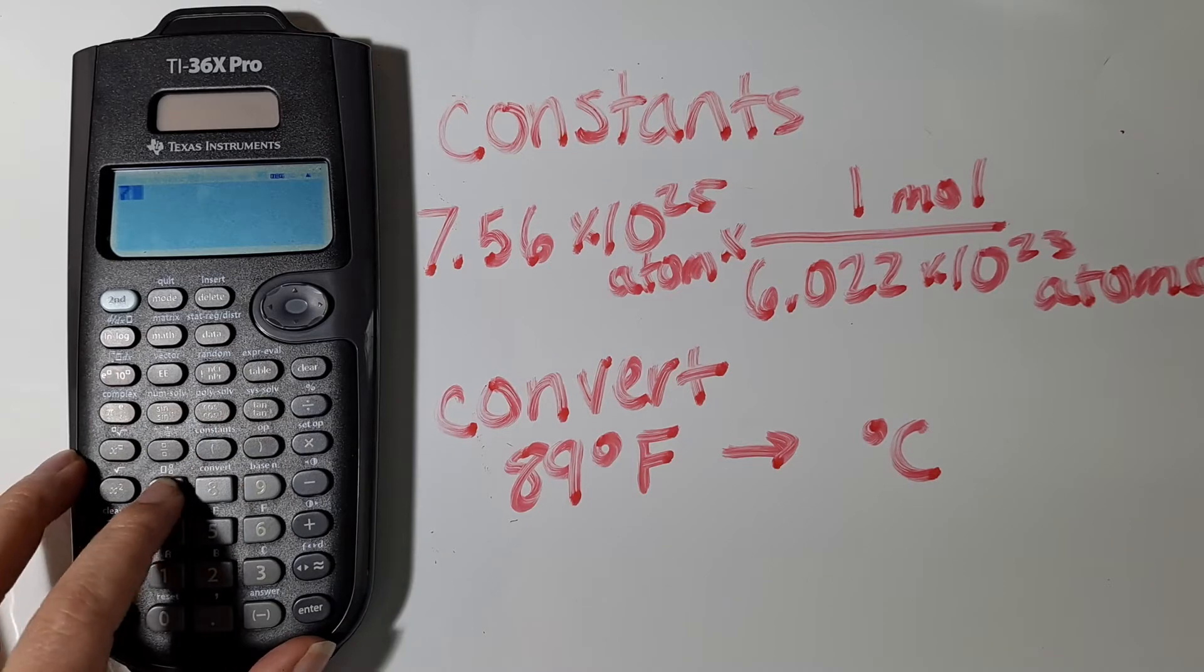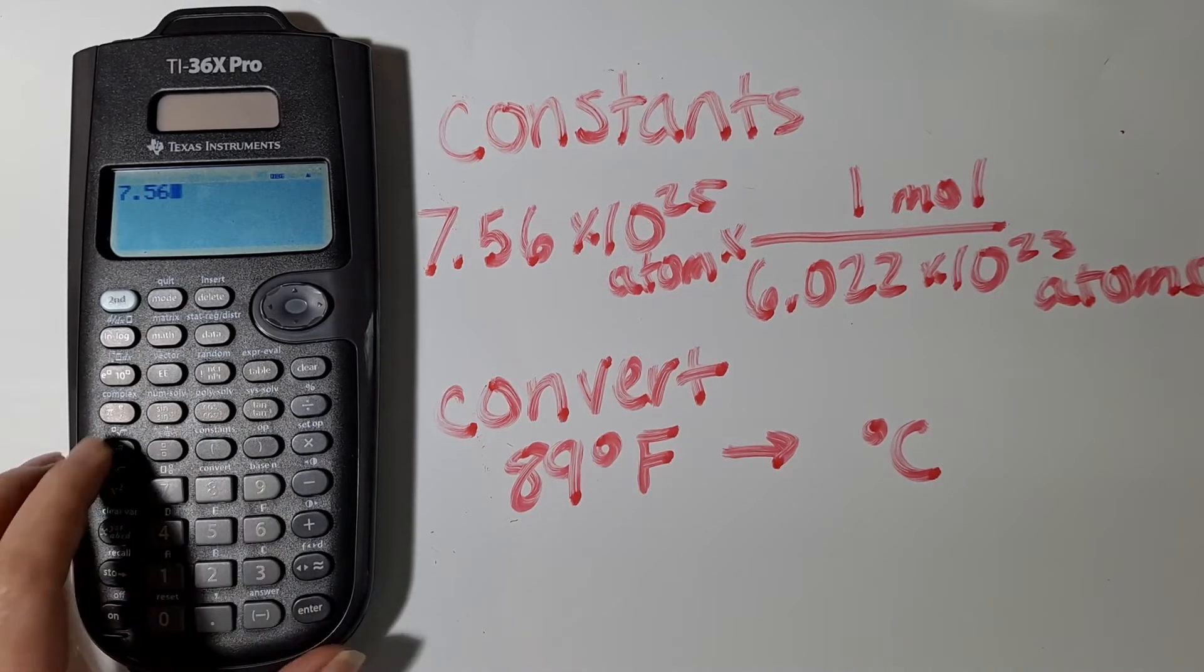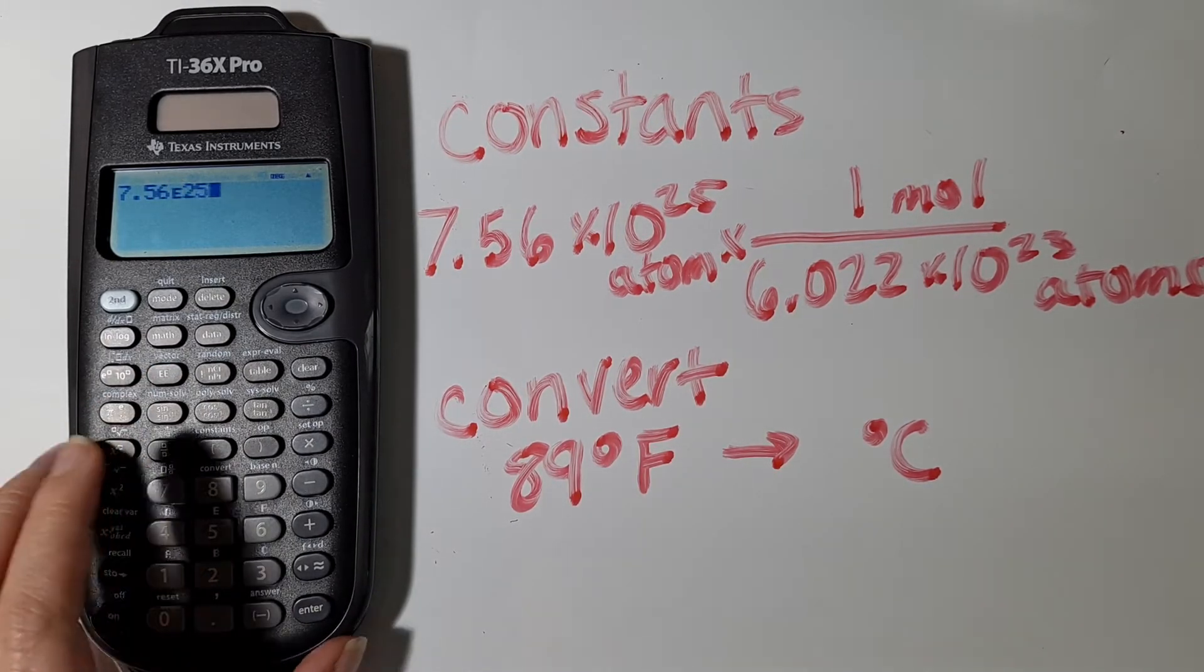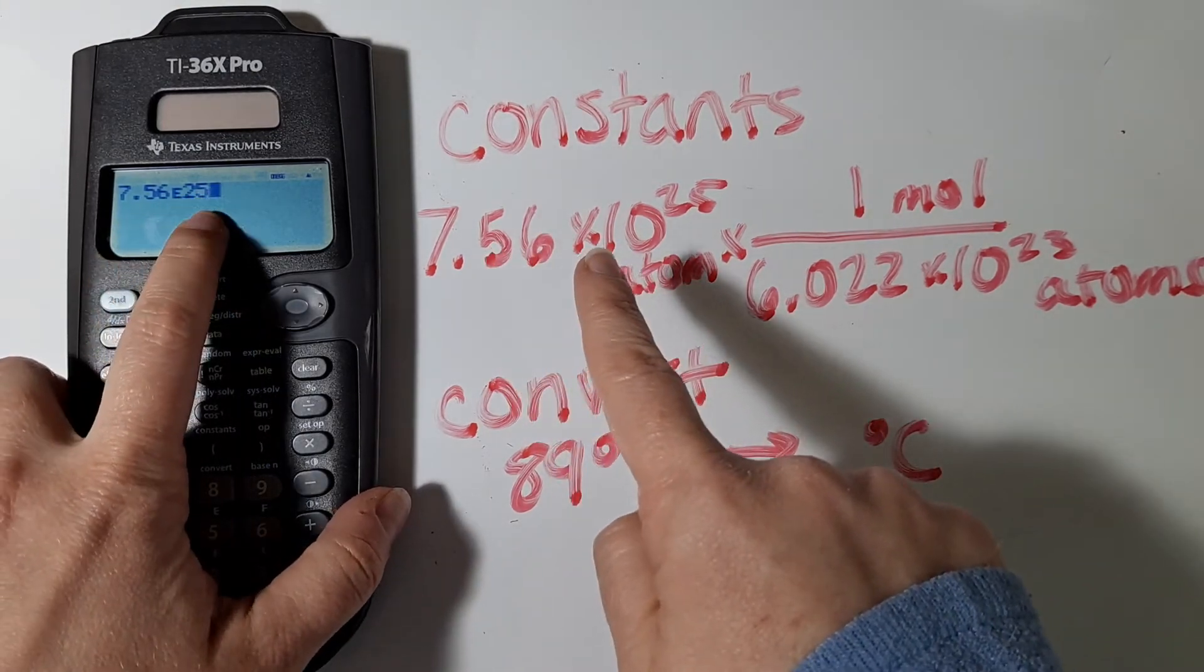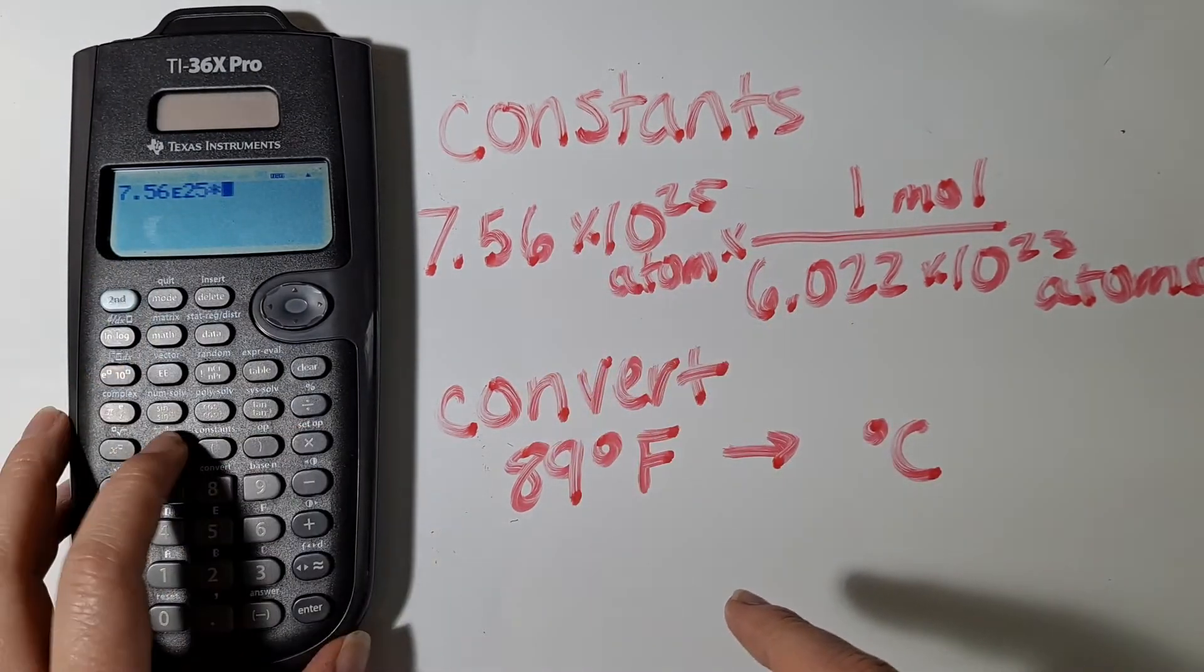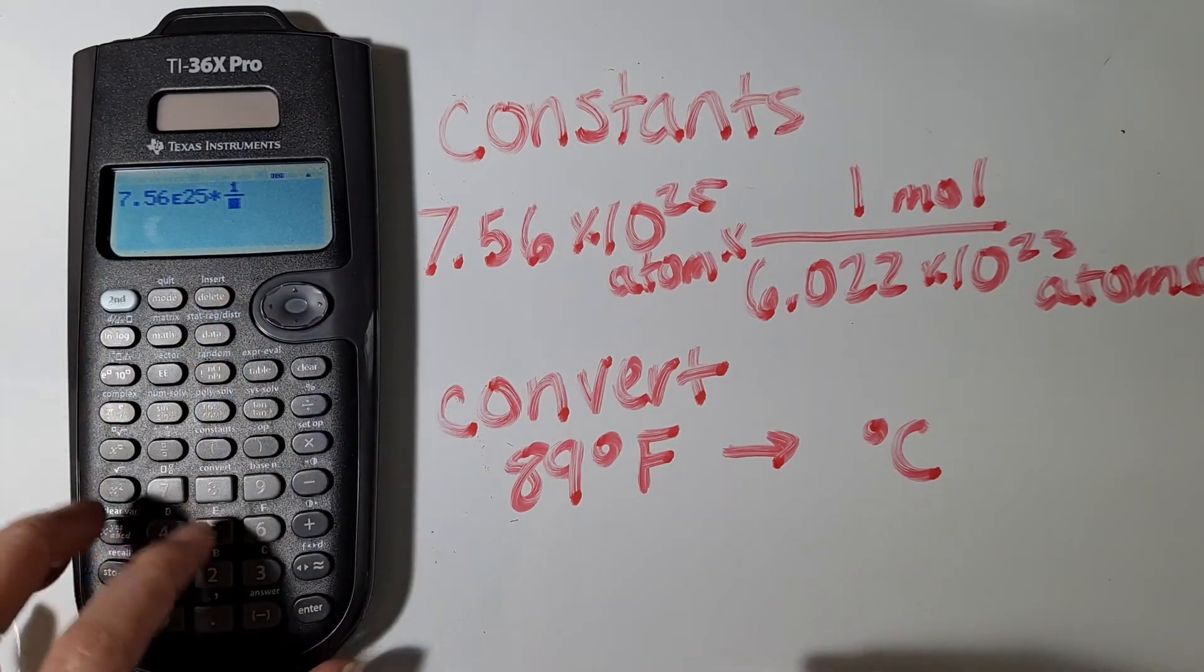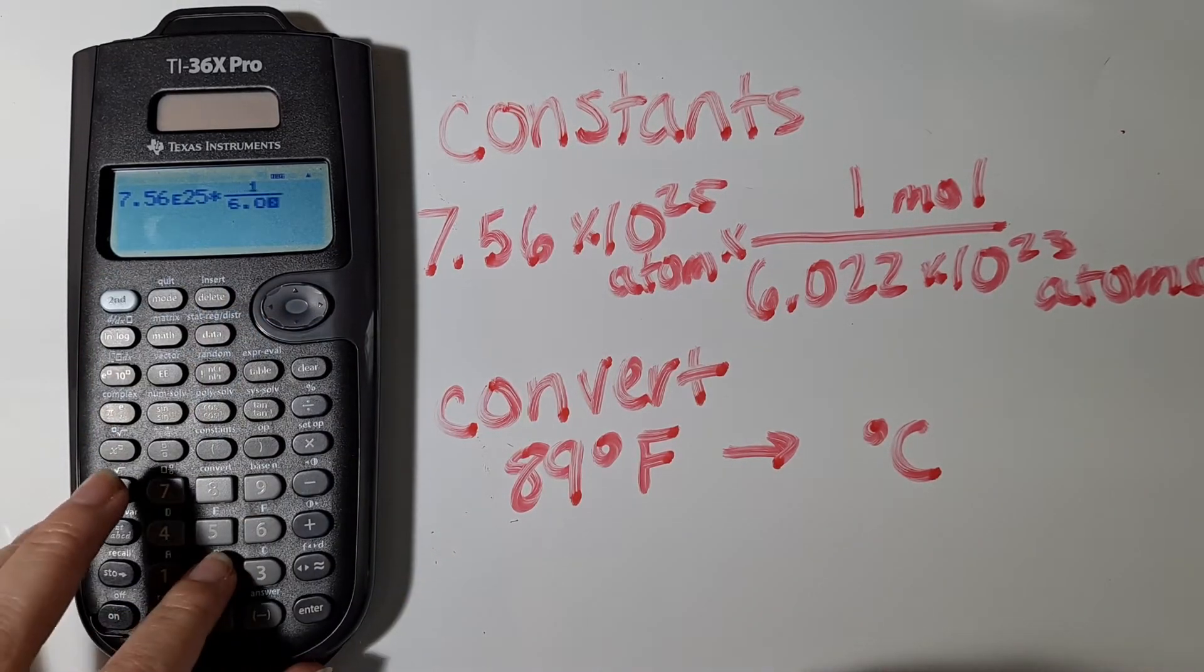When we are doing a calculation such as the one I am showing here, I got 7.56 times 10 to the 25th, and then I'm going to be multiplying that by 1 over Avogadro's number,